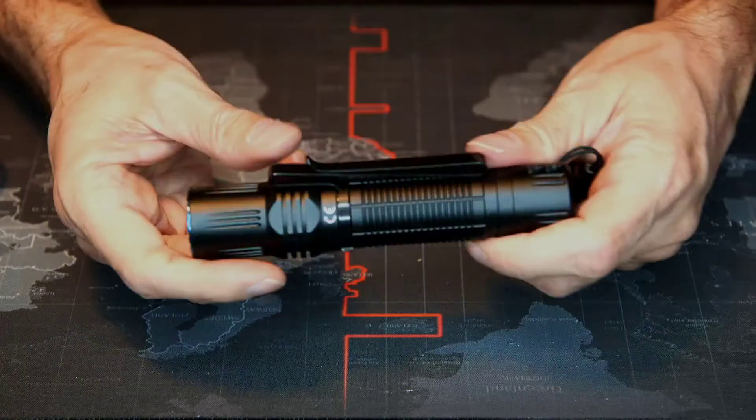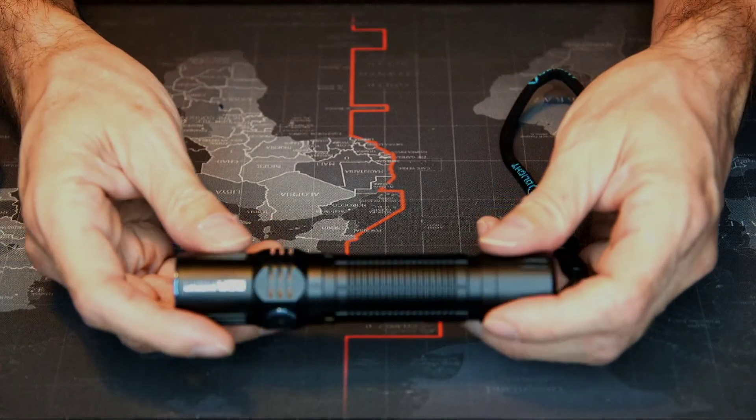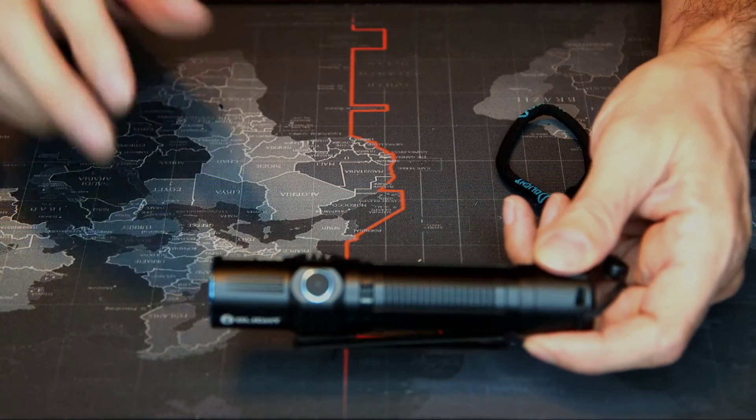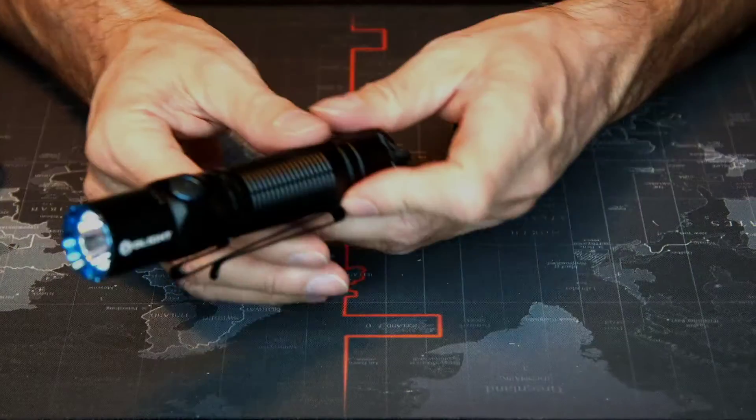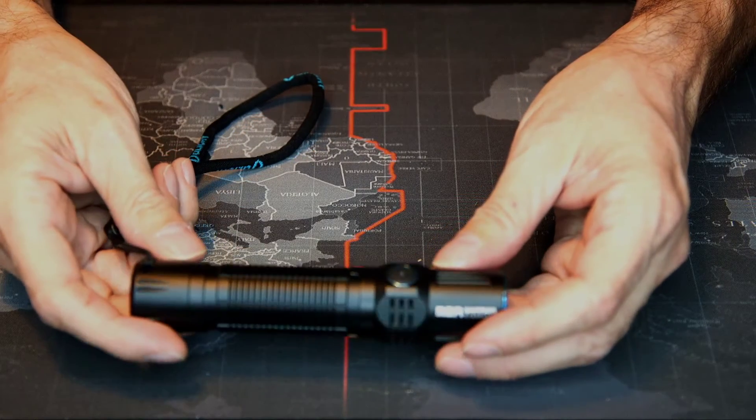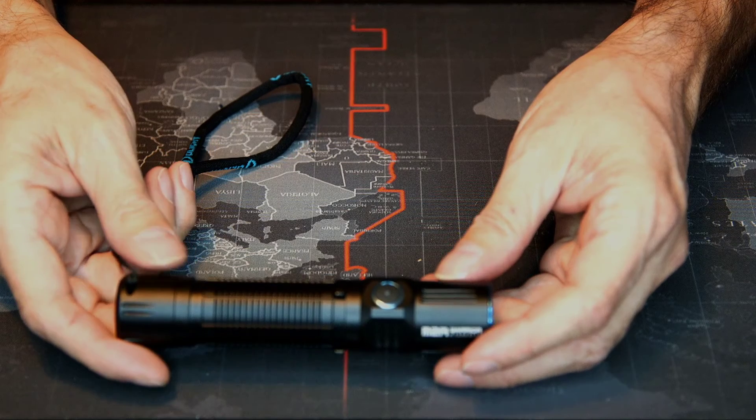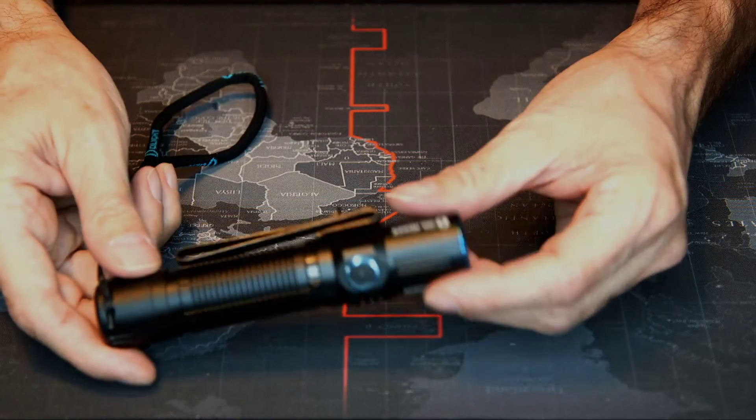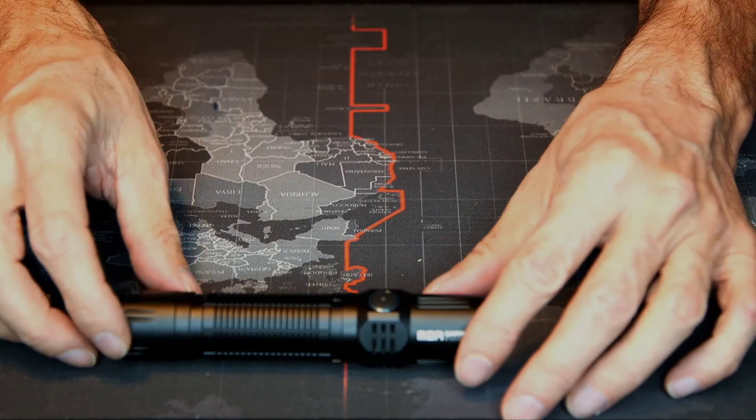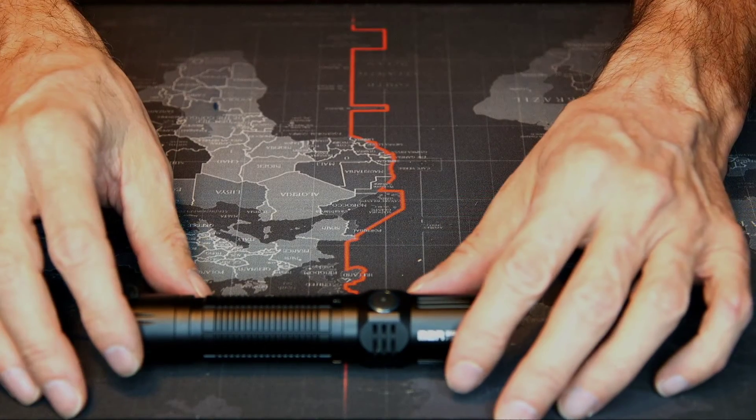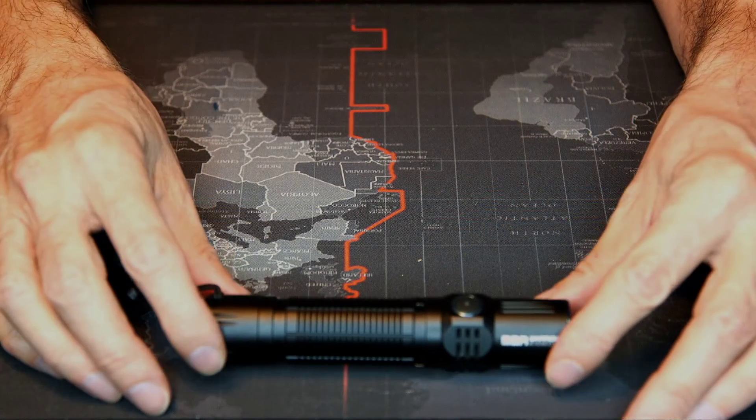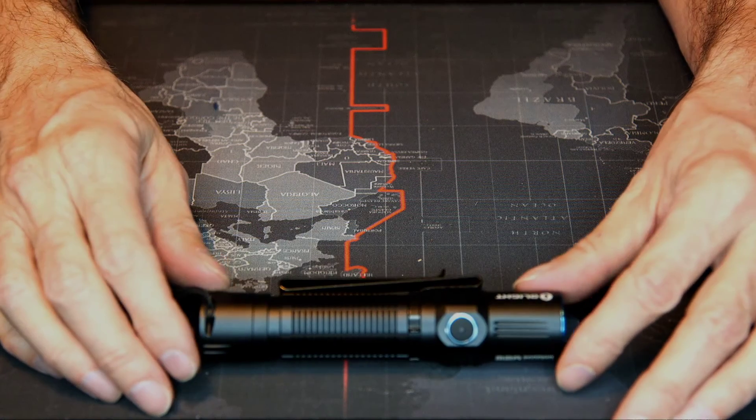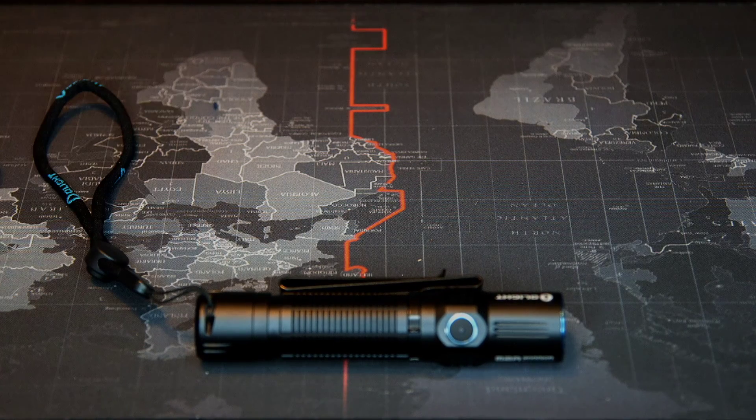So there it is, the Olight M2R Warrior. A great flashlight for everyday use or for police, security guards. It is a home defense depending on what you want to use it for. Great, durable. And so I wanted to show you that. I wanted to really finally release this video on the demo review of this flashlight. Until then, see you guys later and thanks for watching.